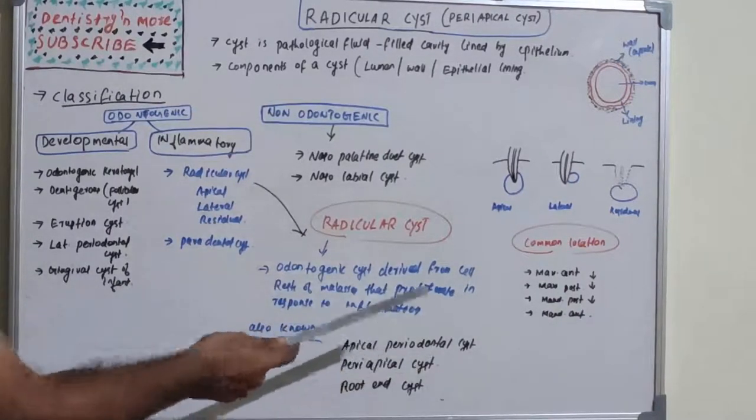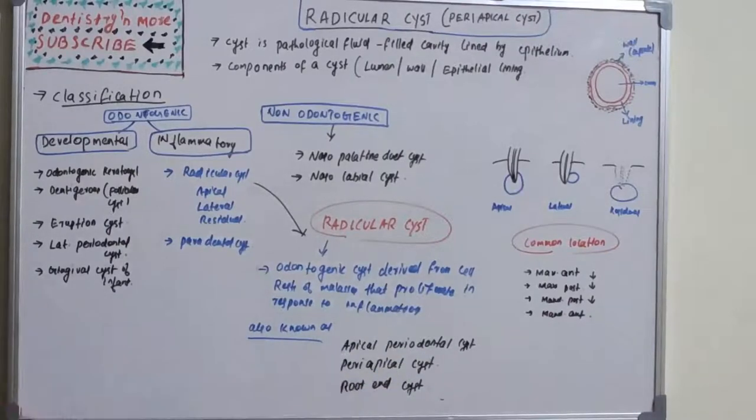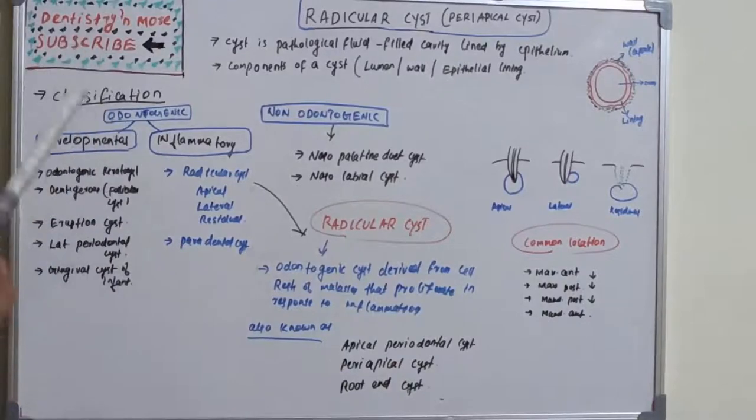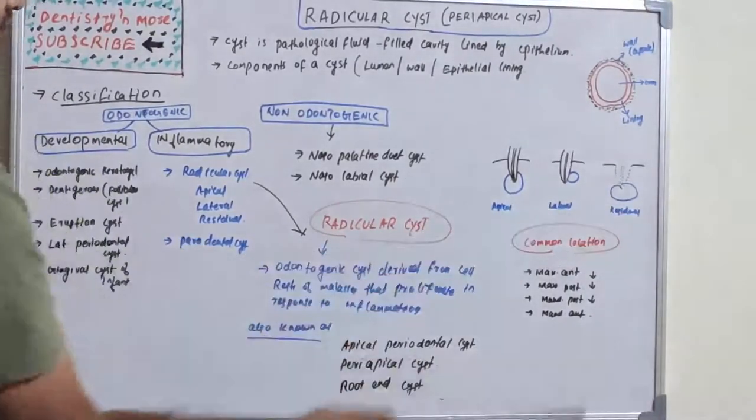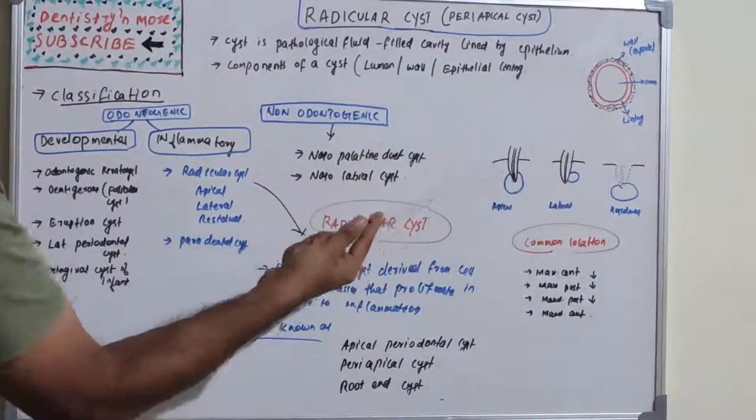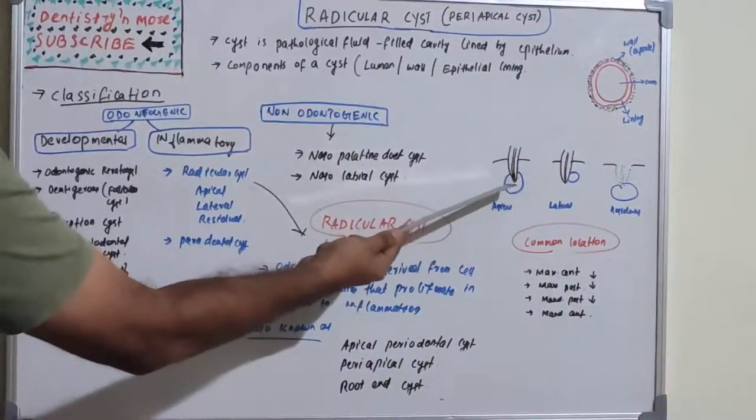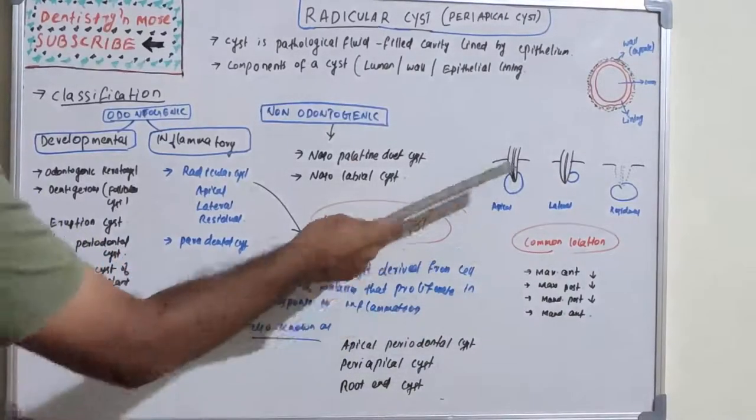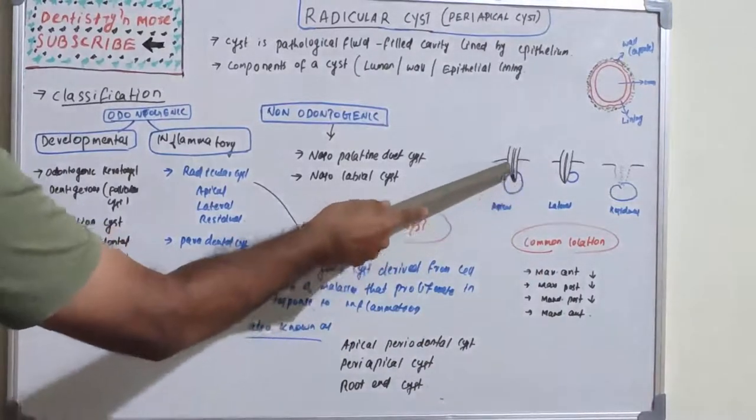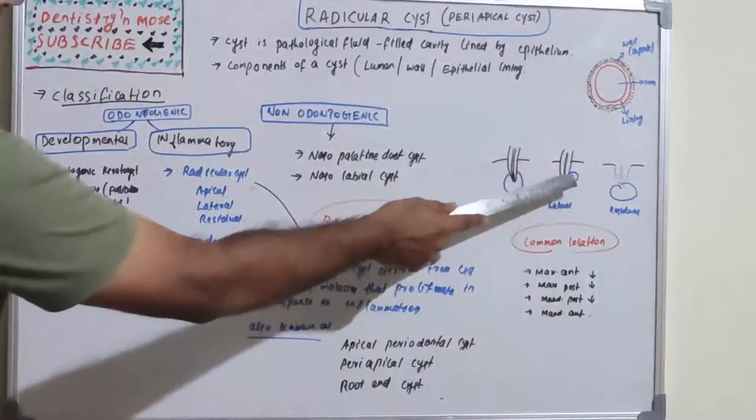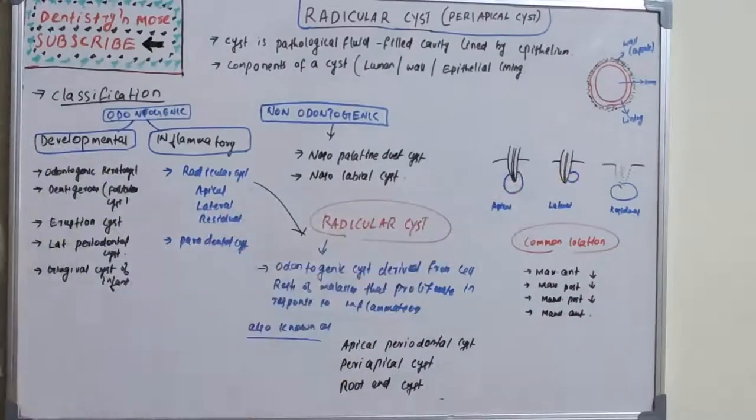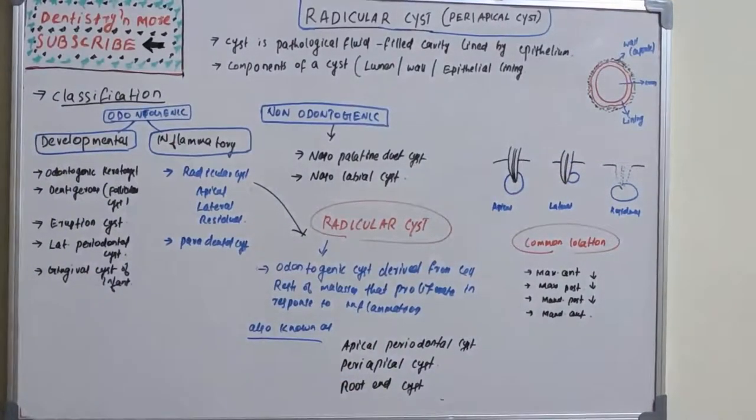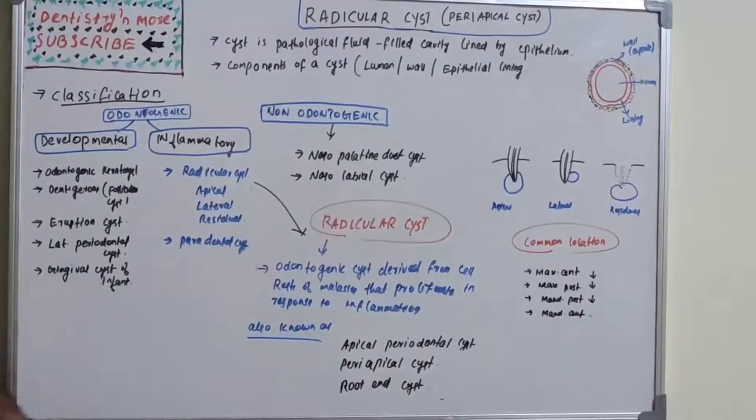It is also known as apical periodontal cyst, periapical cyst, or root end cyst. We have three basic types: apical, lateral, and residual. Apical and lateral are based on the relative position of the cyst with respect to the root. Apical is at the tip, circumscribing the tip exactly, while lateral cyst is on the lateral side of the root.